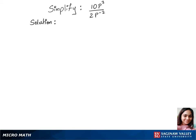To simplify 10 times p power 3 over 2 times p power minus 2, we'll first cross out 10 and 2, giving us 5 times p power 3 over p power minus 2. Now we can use the quotient rule.